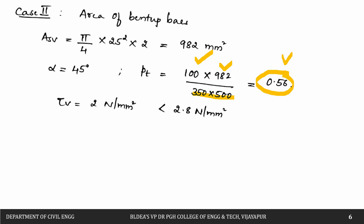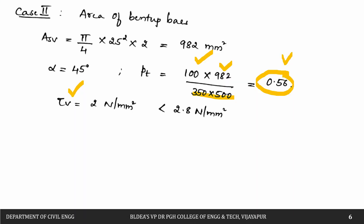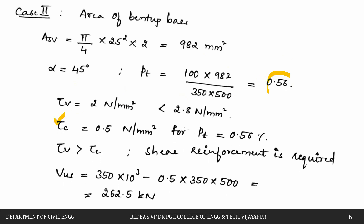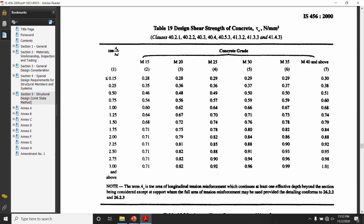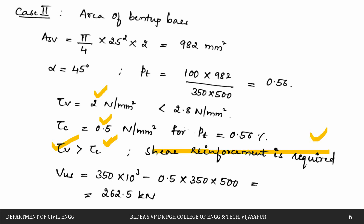For Pt = 0.56% and M20 concrete, interpolating from the IS code table gives τc ≈ 0.5 N/mm². Comparing: τv = 2 N/mm² is greater than τc = 0.5 N/mm², so shear reinforcement is required.